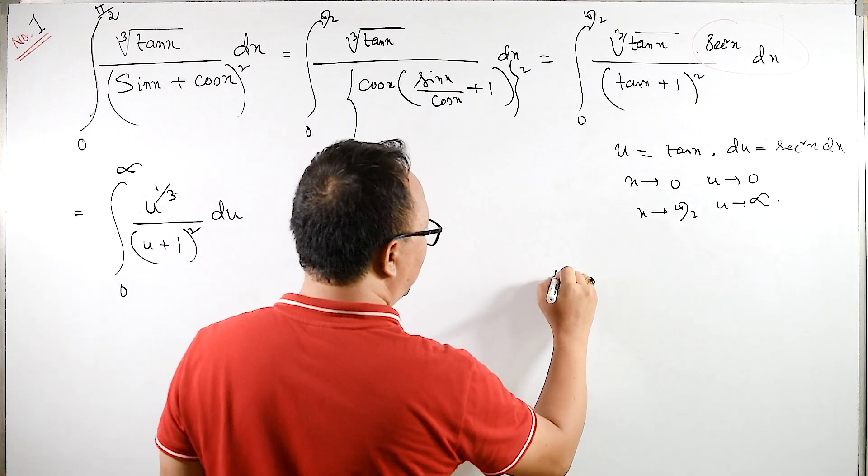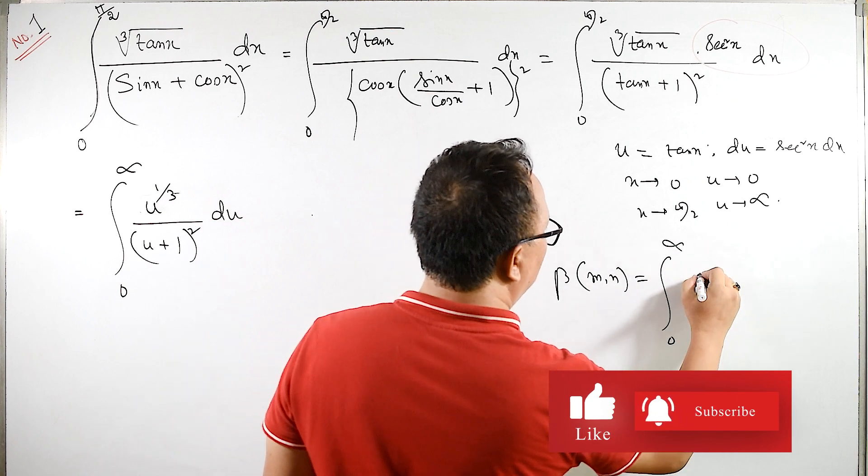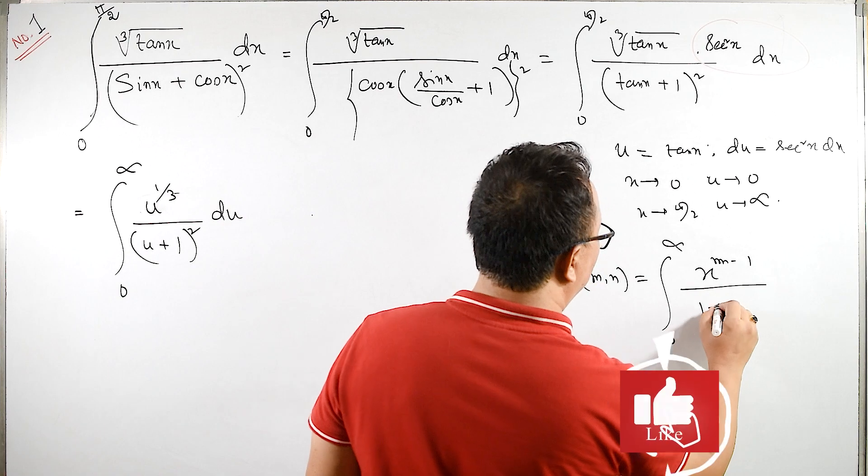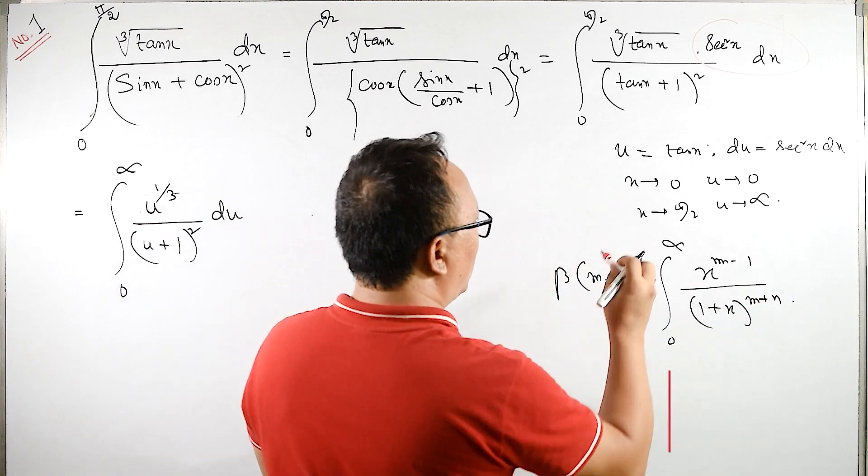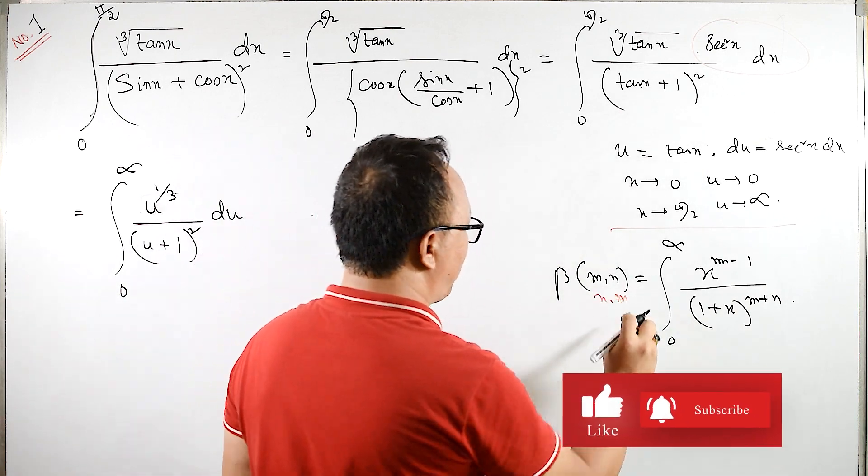We have beta of m, n is equal to 0 to infinity, x raised to m minus 1 upon 1 plus x raised to m plus n. We have this beta of m, n is equal to beta of m, n. This same as m, n.